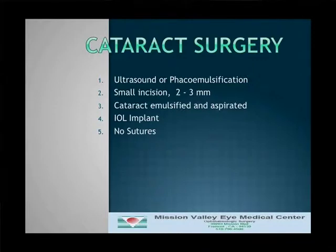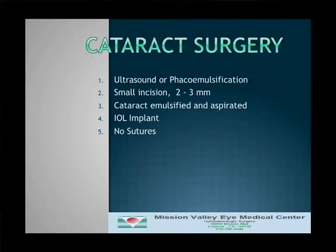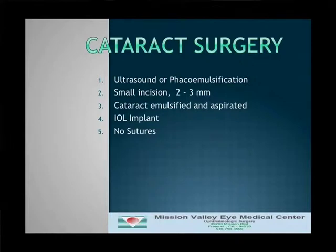Cataract surgery is the most commonly done procedure on the human body these days, perhaps in the range of 1.2 to 2 million surgeries a year across the U.S. Surgery is done with an ultrasound probe, also called a phacoemulsifier — 'phaco' means the lens or cataract, and 'emulsification' means to break into tiny pieces. This probe goes inside the eye through a very small incision, breaks the cataract into small particles, and aspirates it through a tiny 2-millimeter incision. When we remove the cataract, we put an intraocular lens implant in the eye.